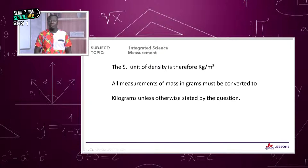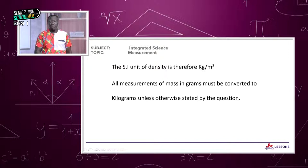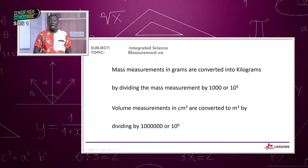The SI unit of density is therefore kilograms per meter cubed. All measurements of mass in grams must be converted to kilograms unless otherwise stated. You convert mass from grams to kilograms by dividing by 1,000, or 10 to the power 3.